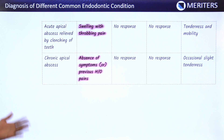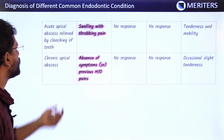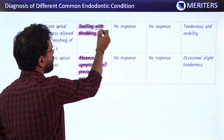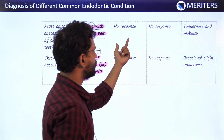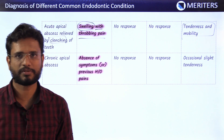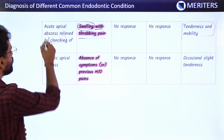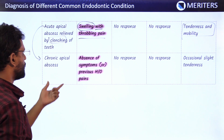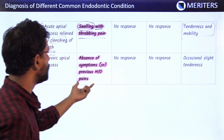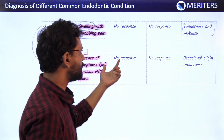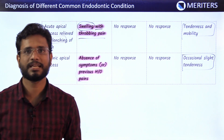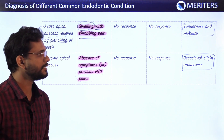When pulpal pathology progresses to the apical area, it forms an acute apical abscess, which is generally aggravated by clenching. Symptoms include swelling with throbbing pain, no response to any pulpal tests — either thermal or electrical — and tenderness with possible mobility. If treatment is not given, it becomes a chronic apical abscess, where there is absence of symptoms but a history of pain. There will be no response to any pulpal test, and occasional slight tenderness to percussion may be present.